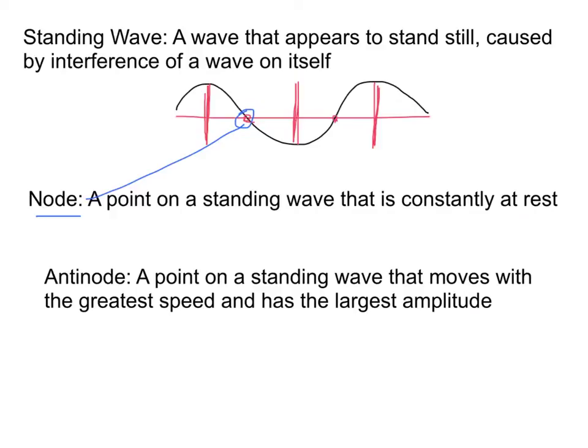This anti-node is the points that occur such as that.